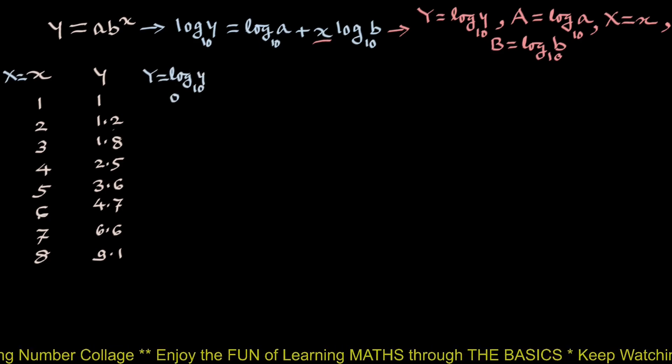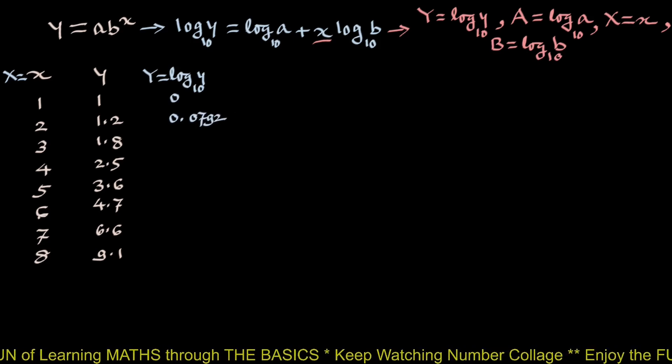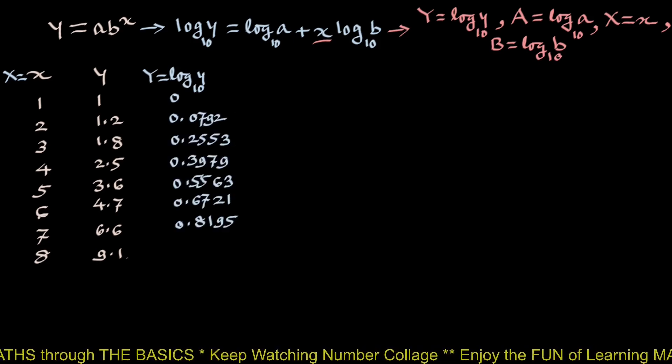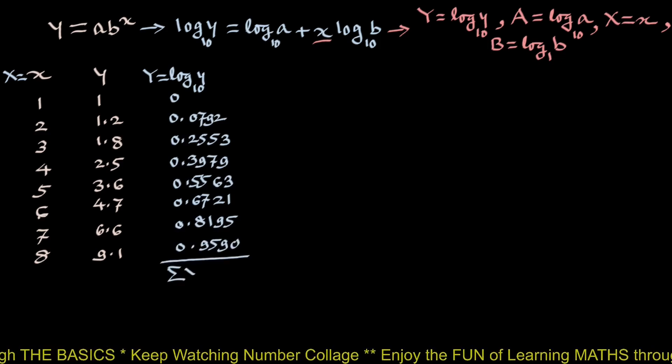We name this x capital X, capital Y equals log y to the base 10. Log 1 is 0, log 1.2 is 0.0792, etc. And log of 9.1 is 0.9590. Summation capital Y is 3.7393.